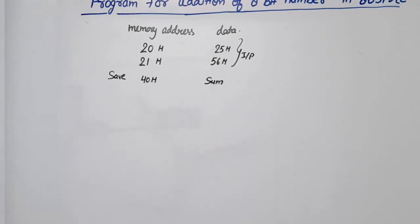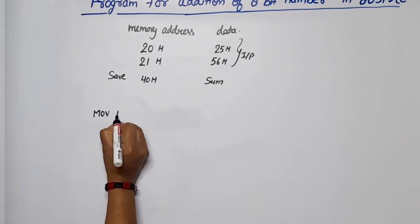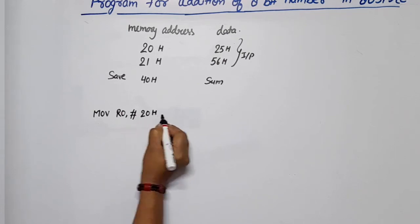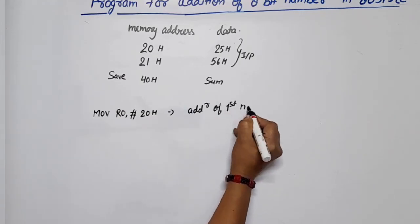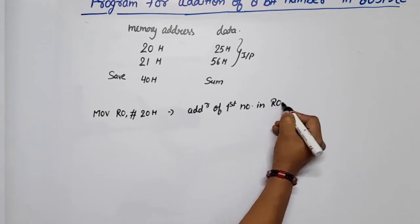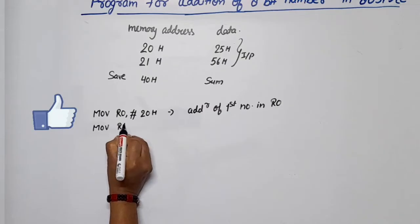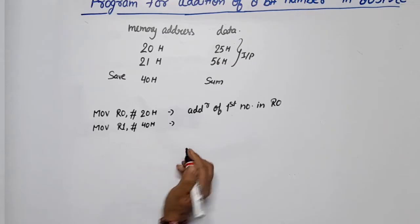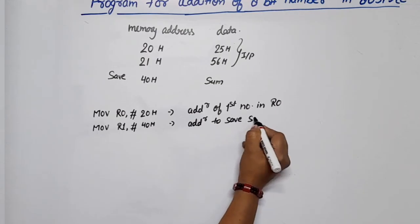We will write this as a general program so we don't have to rewrite it. First, we set the source pointer: MOV R0, #20H - this loads the address of the first number into R0. Then we set the destination pointer: MOV R1, #40H - this is the address where we will save the sum.